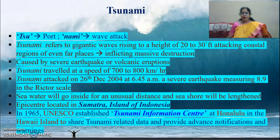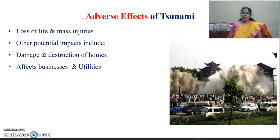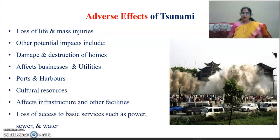In 1965, UNESCO established a Tsunami Information Center at Honolulu in the Hawaii Island to share tsunami-related data and to provide advance notification and warnings. The adverse effects of tsunami include loss of life and major injuries. Other impacts include damage and destruction of homes, businesses, utilities, ports, harbors, cultural resources, infrastructure, and other facilities.